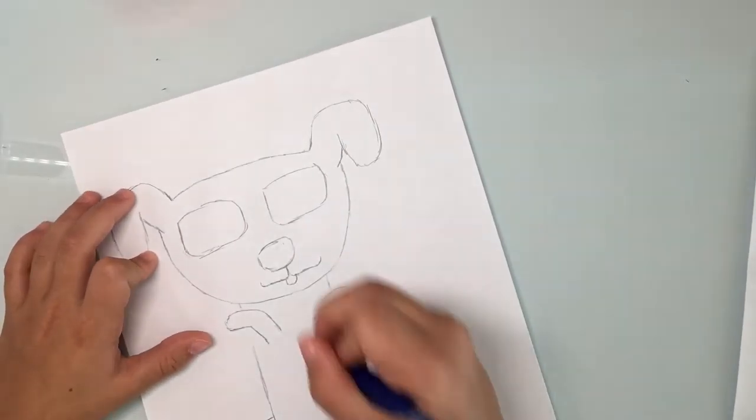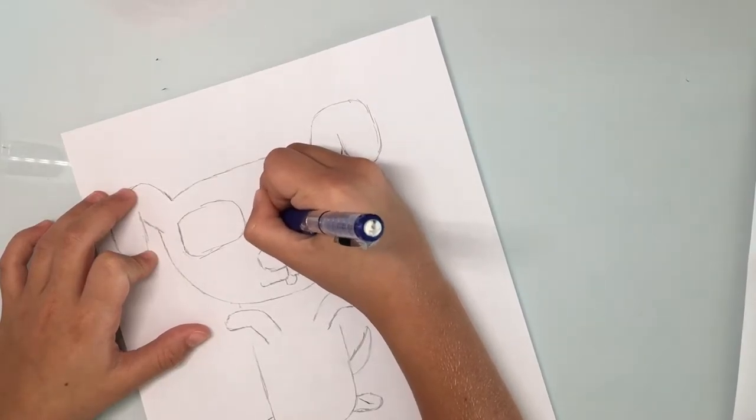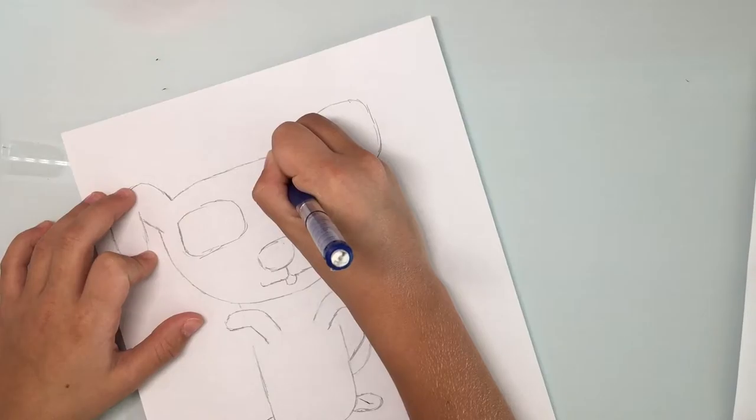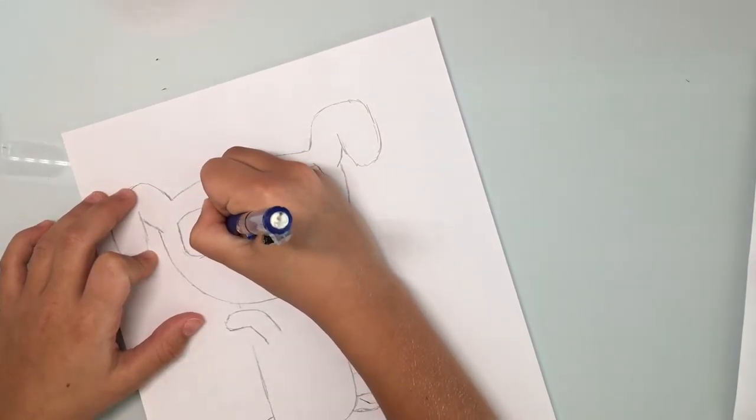Anyway, erase those two dots and just draw the line to that point. So you should be able to just slightly see that eraser mark.